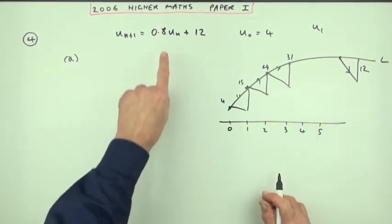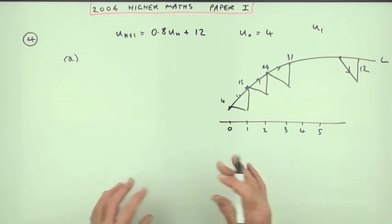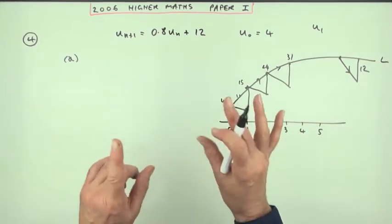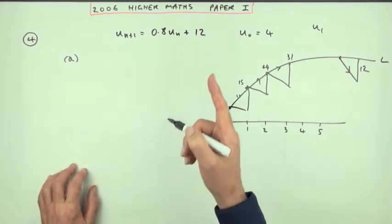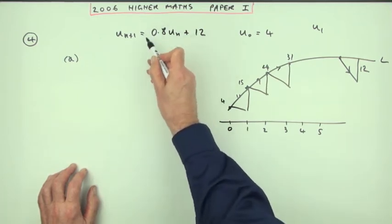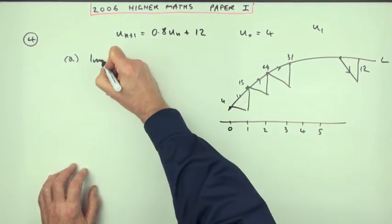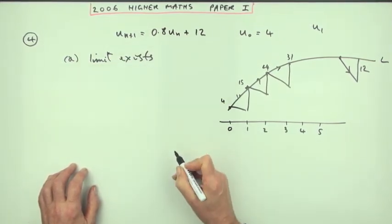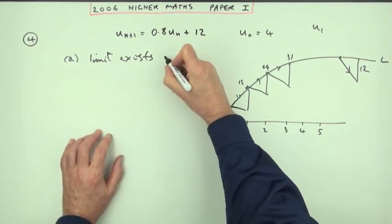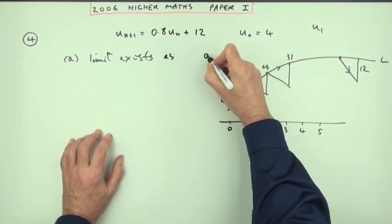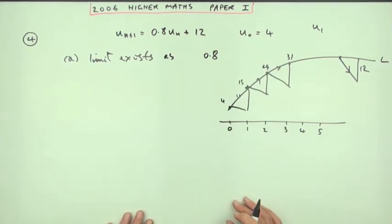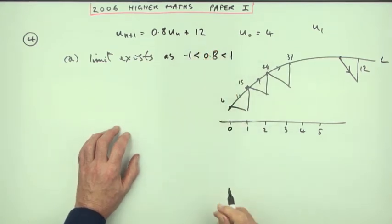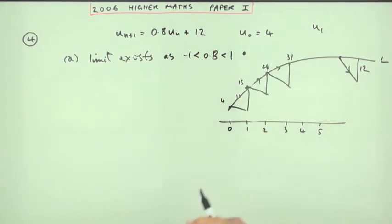Now that's only going to happen if you're multiplying by a fraction. The first mark is simply for stating why's it got a limit? It's got a limit because you're multiplying by a proper fraction. So you can simply say a limit exists as, now how would you write that 0.8 as a proper fraction? Simply with this little inequality, since it's less than 1 and greater than negative 1. That's the mark for part A.